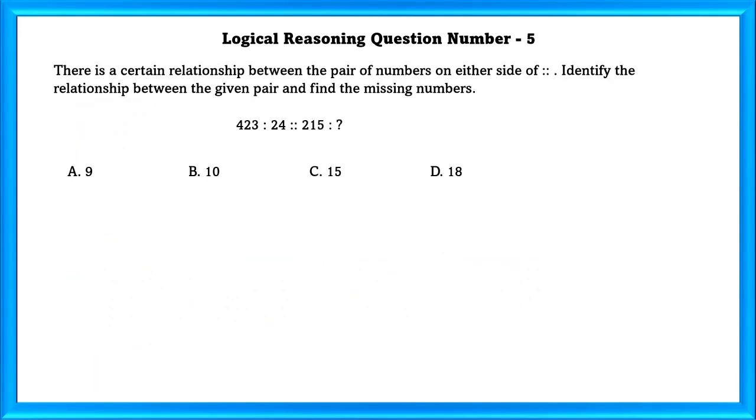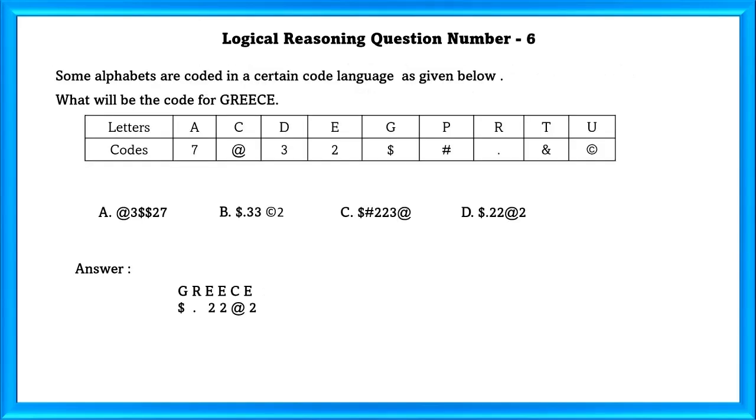Logical Reasoning Question Number 5: There is a certain relationship between the pair of numbers on either side of the colons. Identify the relationship between the given pair and find the missing number. Here, if we multiply the digits 4, 2, and 3, we get 24. And similarly, 2, 1, and 5 multiplied, we get 10. So our answer is 10.